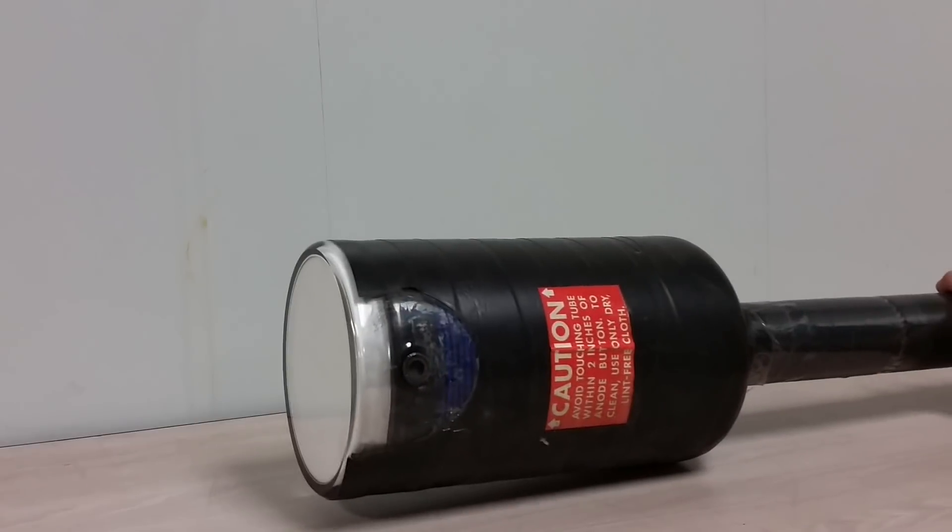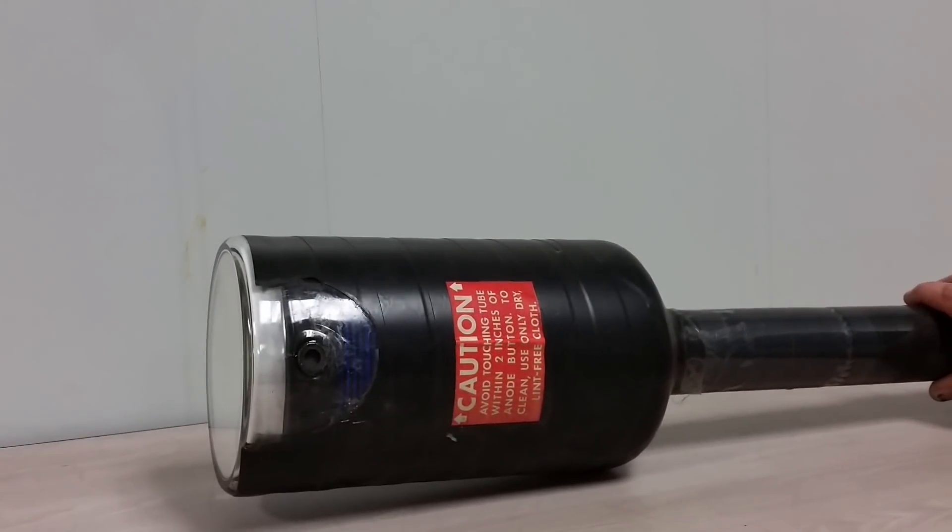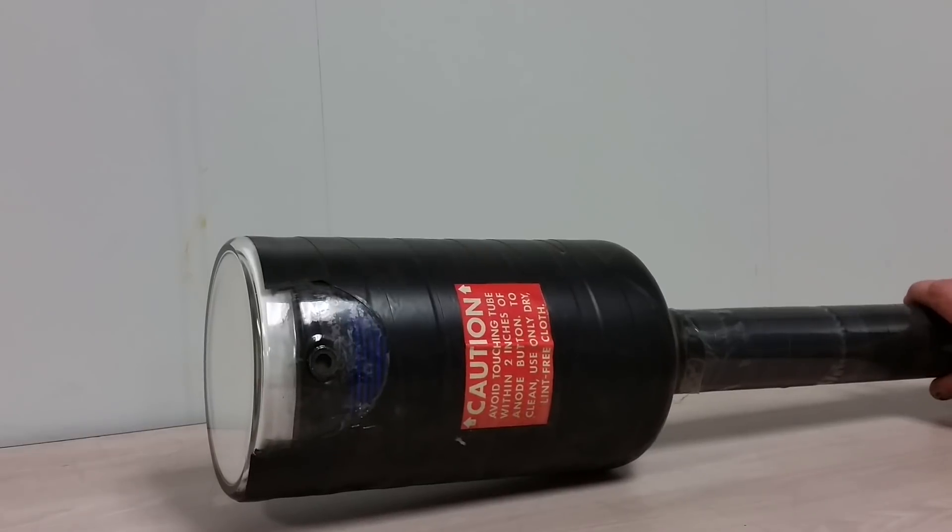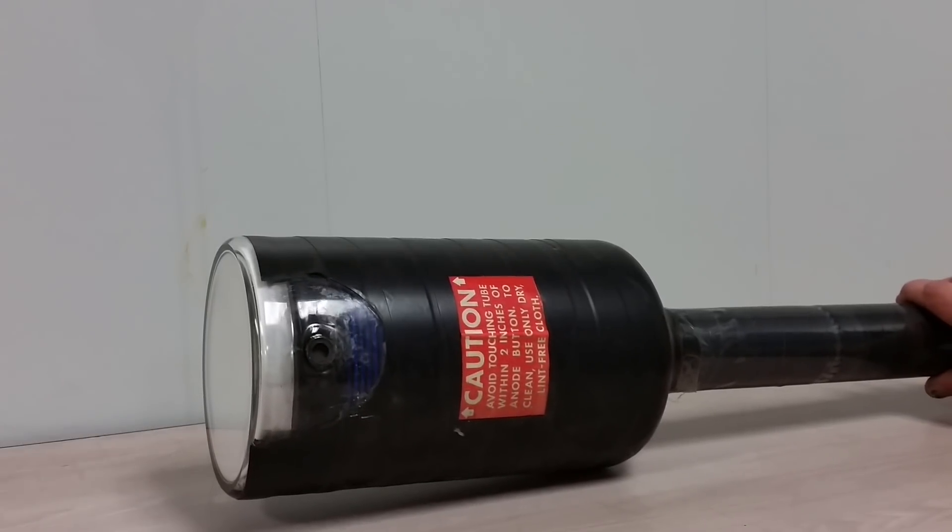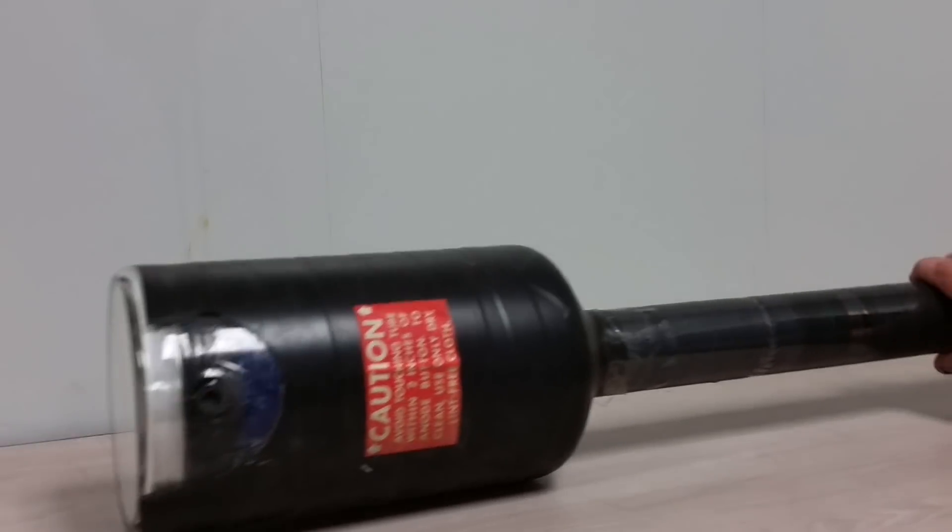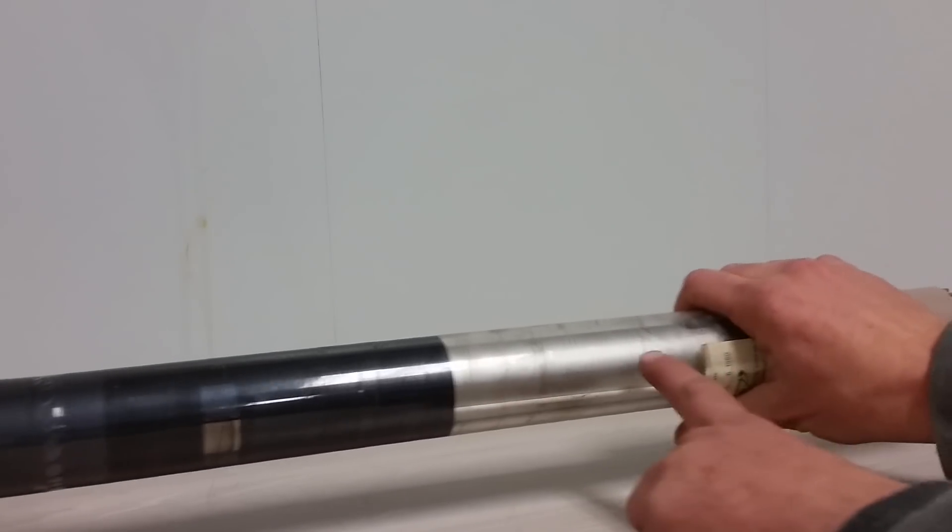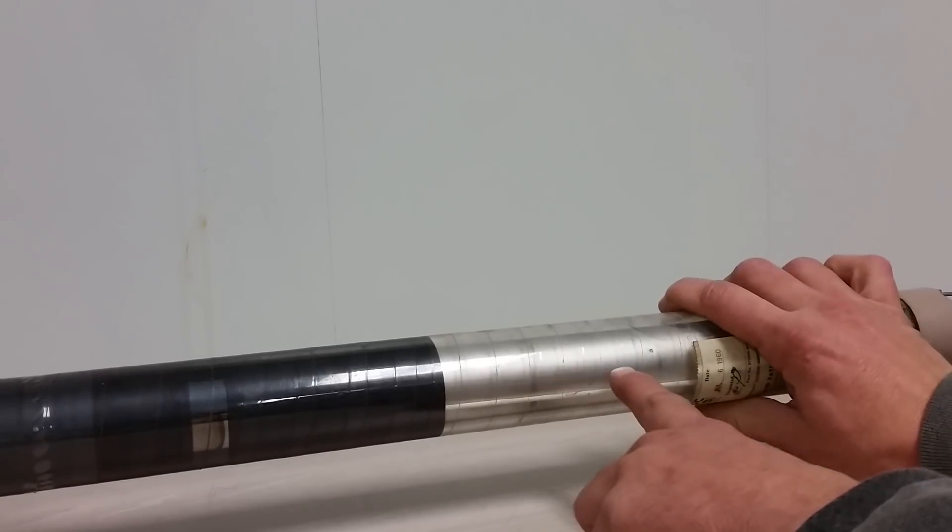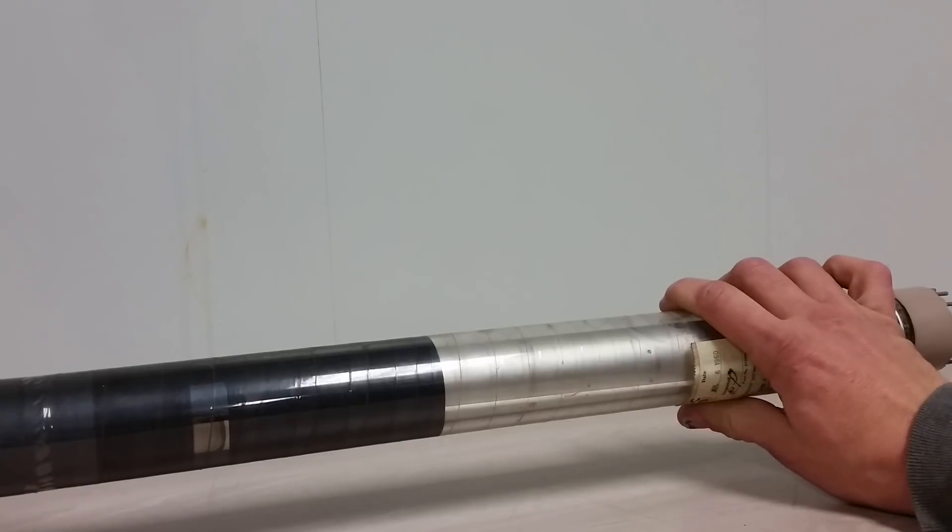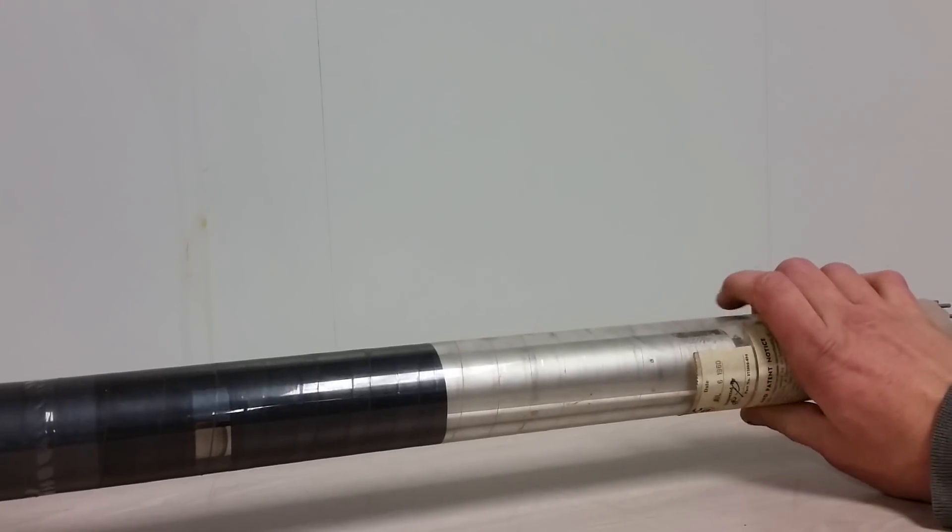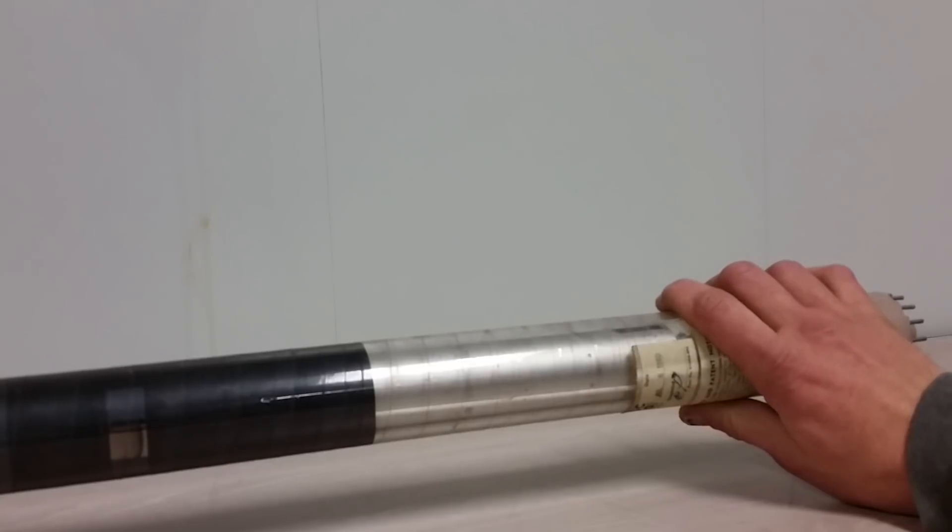One interesting thing, there is a related tube. There are actually a couple of related tubes. One is called the Matricon, I believe it's called. And instead of a mask in here that shapes the beam to look like a character, it was actually a matrix of electrodes.